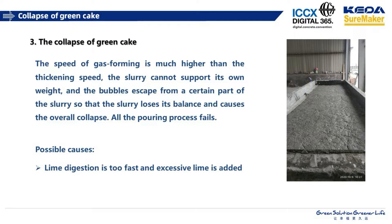The next point we would like to talk about is the collapse of the green cake. Sometimes, when the speed of gas forming does not match well or is much higher than the thickening speed, the slurry cannot support its own weight. Bubbles escape from certain parts of the slurry, causing the slurry to lose balance, resulting in overall collapse or pouring process failure. First, we should check the lime reaction speed — if the speed is too high and the amount of lime added is too large, this will cause the collapse.